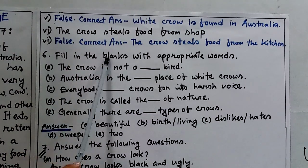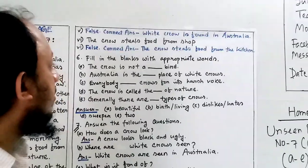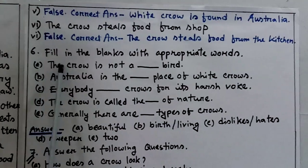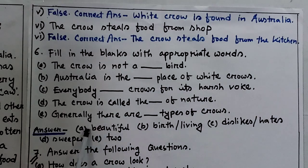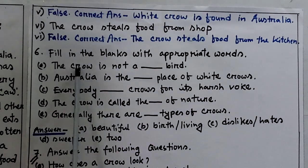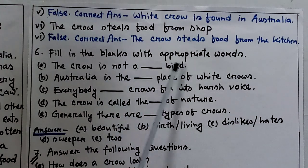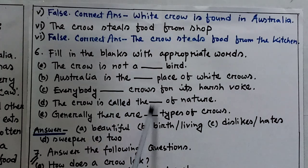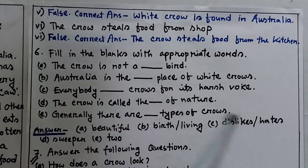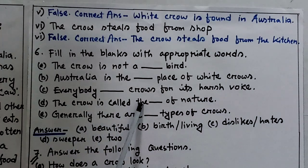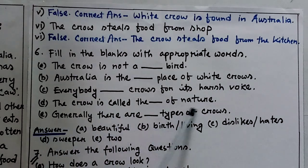Fill in the blanks with appropriate words. The crow is not a beautiful bird. Birth or living place of white crows — C. Everybody dislikes or hates crows for their harsh voice — D. The crow is called the sweeper of nature — G. Generally there are two types of crows.